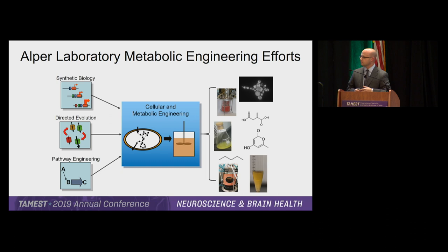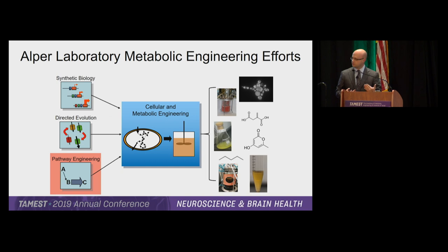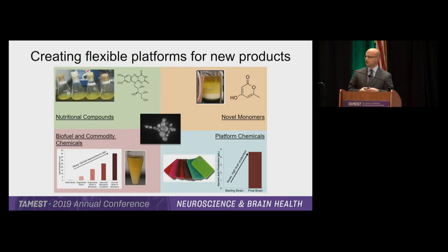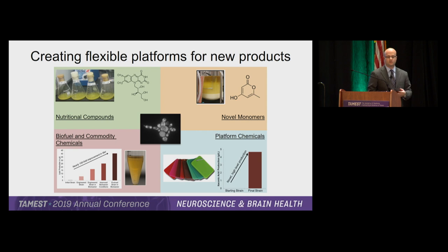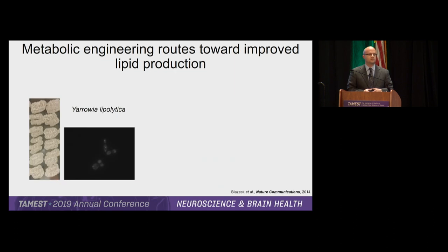Finally, I want to showcase work on making new pathways — our end goal of making new products for cells. All the tools of synthetic biology and directed evolution come to a head when bringing new capacities into cells. We've been working on creating flexible platforms for products using a yeast organism called Yarrowia lipolytica, converting it into a platform for nutraceutical compounds, different types of biofuels, monomers, as well as acrylic plastic precursors.